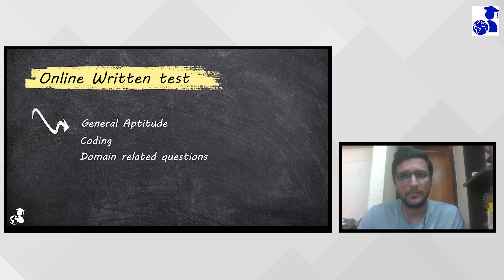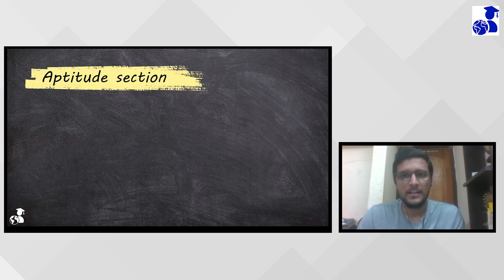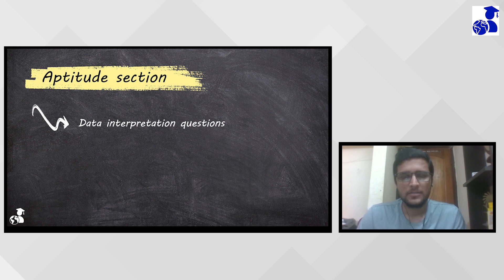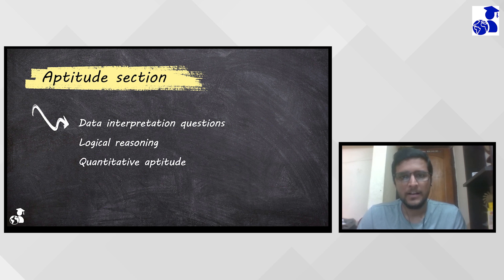In the written round, we had three sections. The first section was aptitude, second was coding, and third was technical. In the aptitude part, most focus was on data interpretation and logical reasoning — about 50% of questions were from these two parts. Logical reasoning was a bit time-consuming and tough, while data interpretation was easy and could be done quickly.